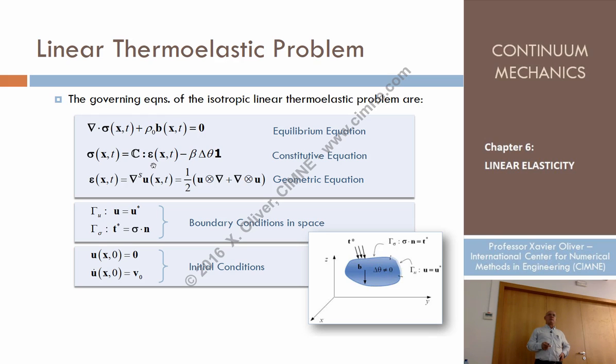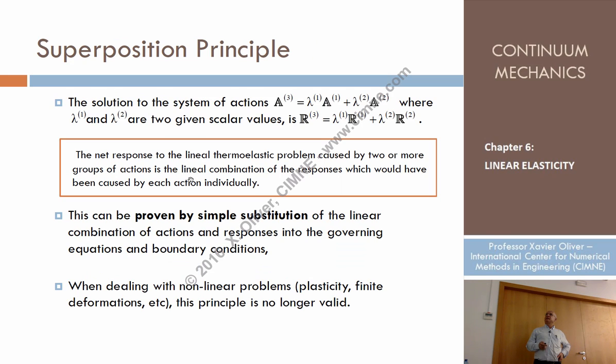So what does this principle say? If you have a system of actions A1 and you compute that response R1, and another system of actions completely different - for instance, this is self-weight and this is wind - and compute the response of that in a thermoelastic problem, then the response to a certain linear combination of system of actions, for instance a coefficient lambda 1 times A1 plus a coefficient lambda 2 times A2, is just nothing else than the combination of the same combination of the responses.